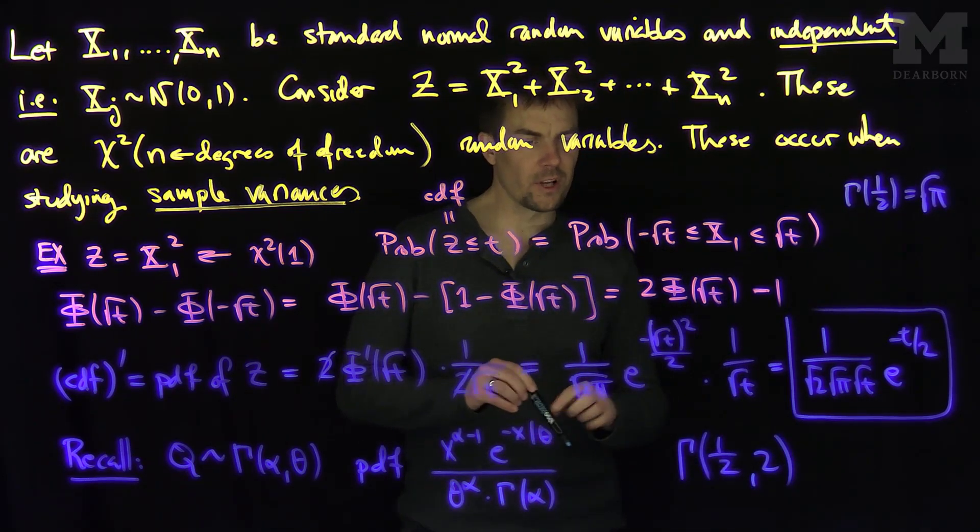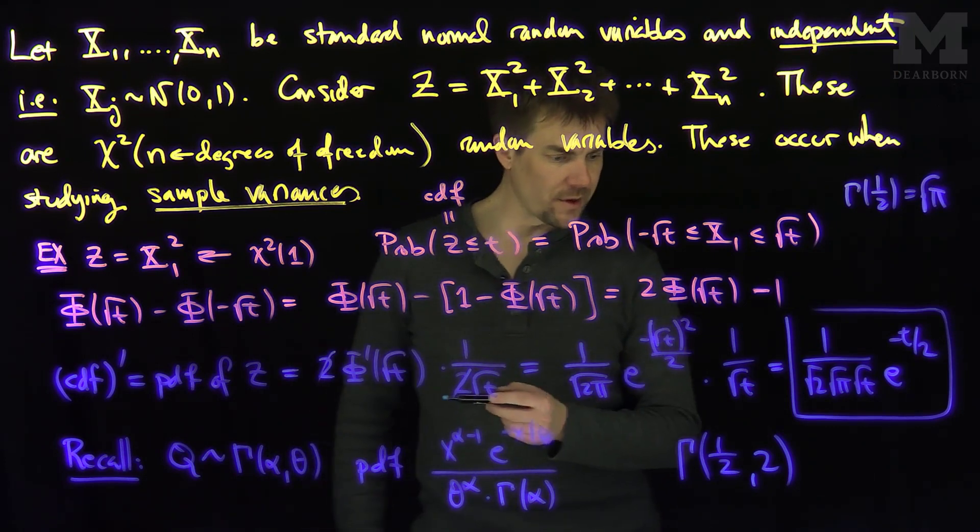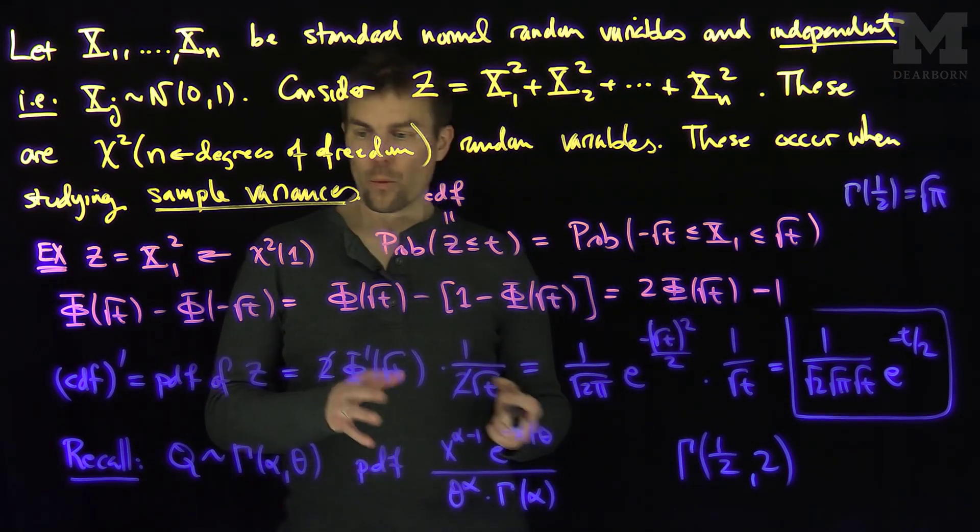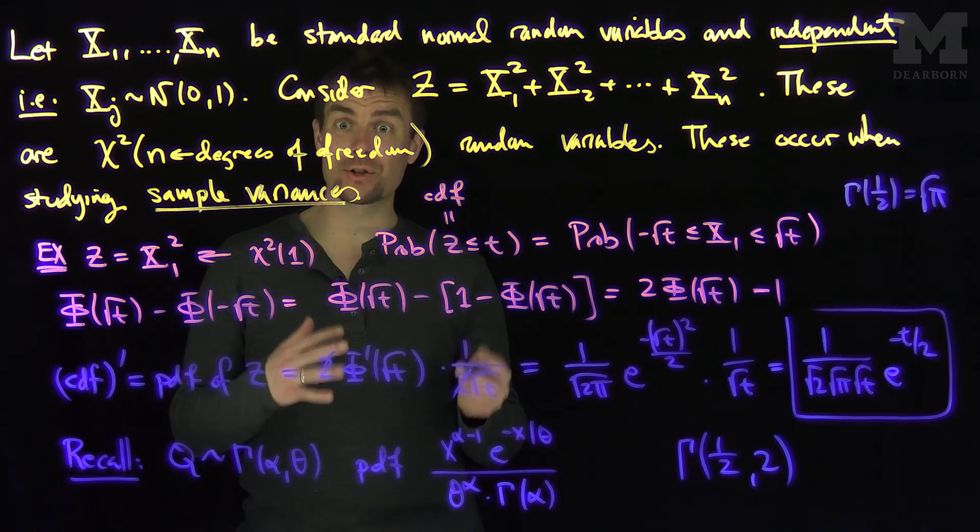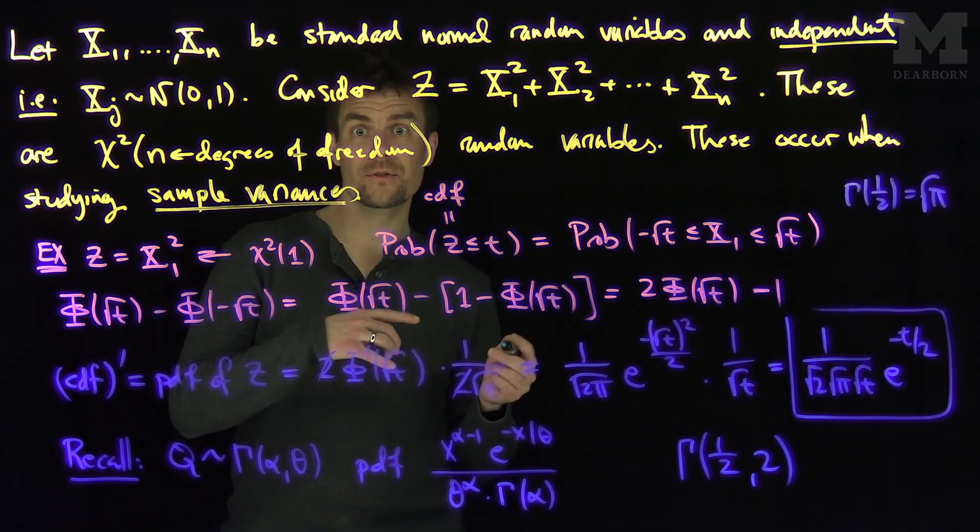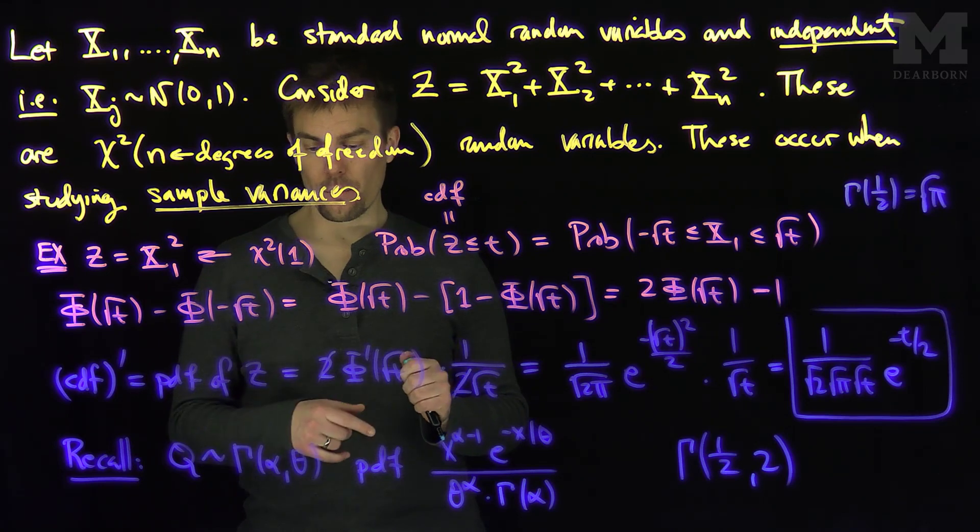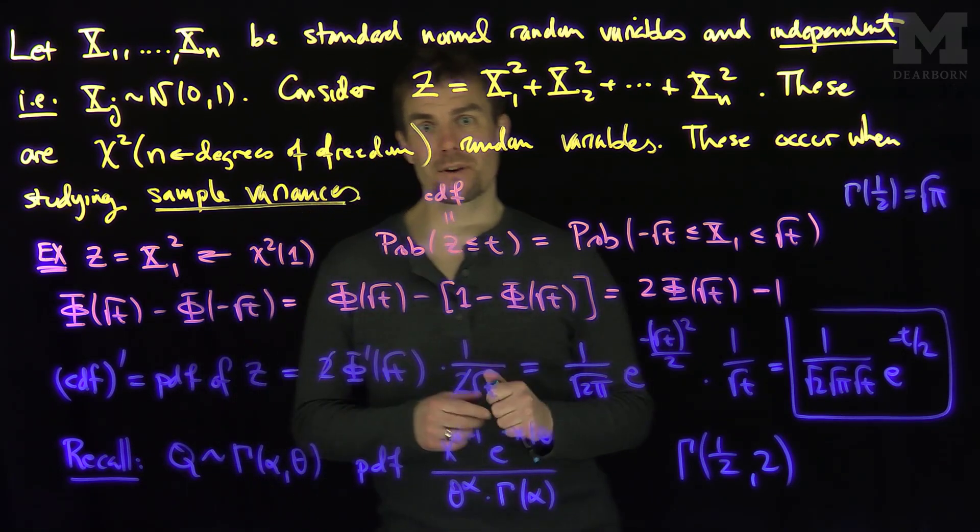And so, more generally, we see that a chi-squared with one degree of freedom is gamma one-half two, and then more generally, if I add up n copies of this, I will again get a gamma distribution with the number of degrees of freedom over two as my parameter for alpha in the problem. Thank you very much.